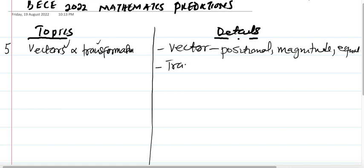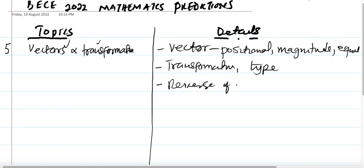Under transformation, we look at reflection, rotation, and enlargement. Then we have reverse transformation, where they give you the images for you to find the actual coordinates, or they draw the graph for you to find the coordinates.